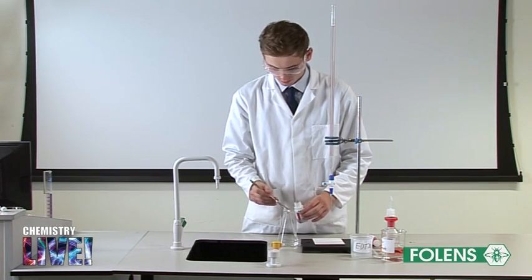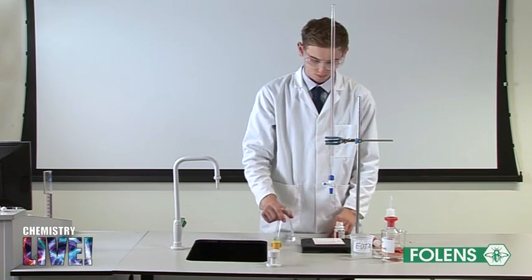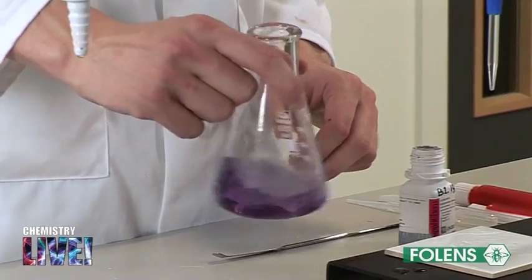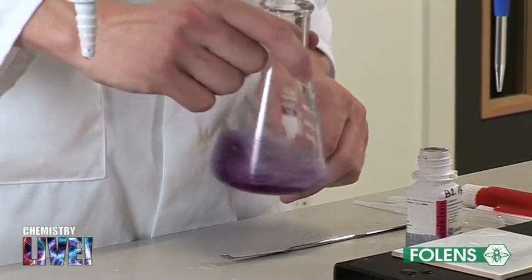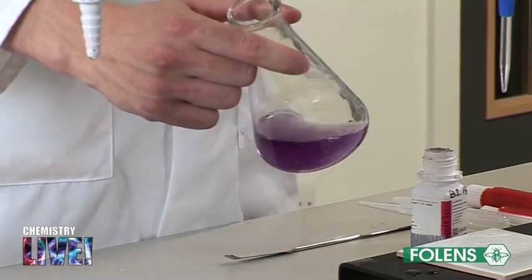In this titration we use a buffer solution to keep the pH around 10 as the indicator works best around this pH. This will help to give us an accurate endpoint in the titration.